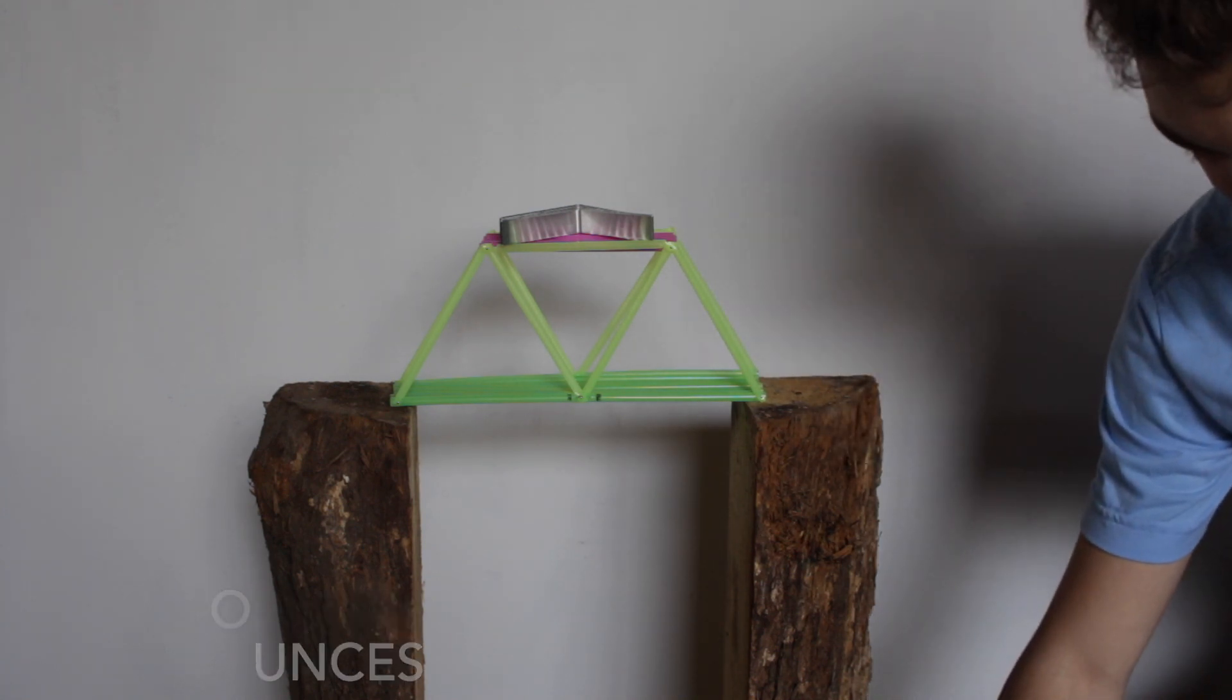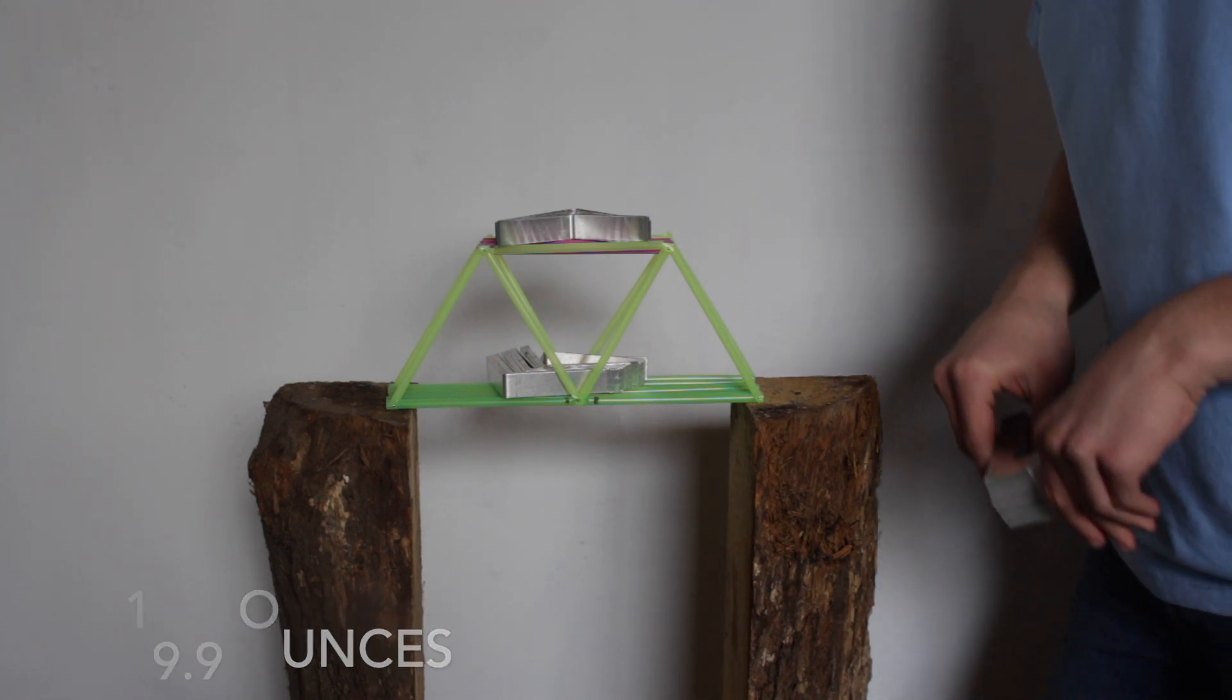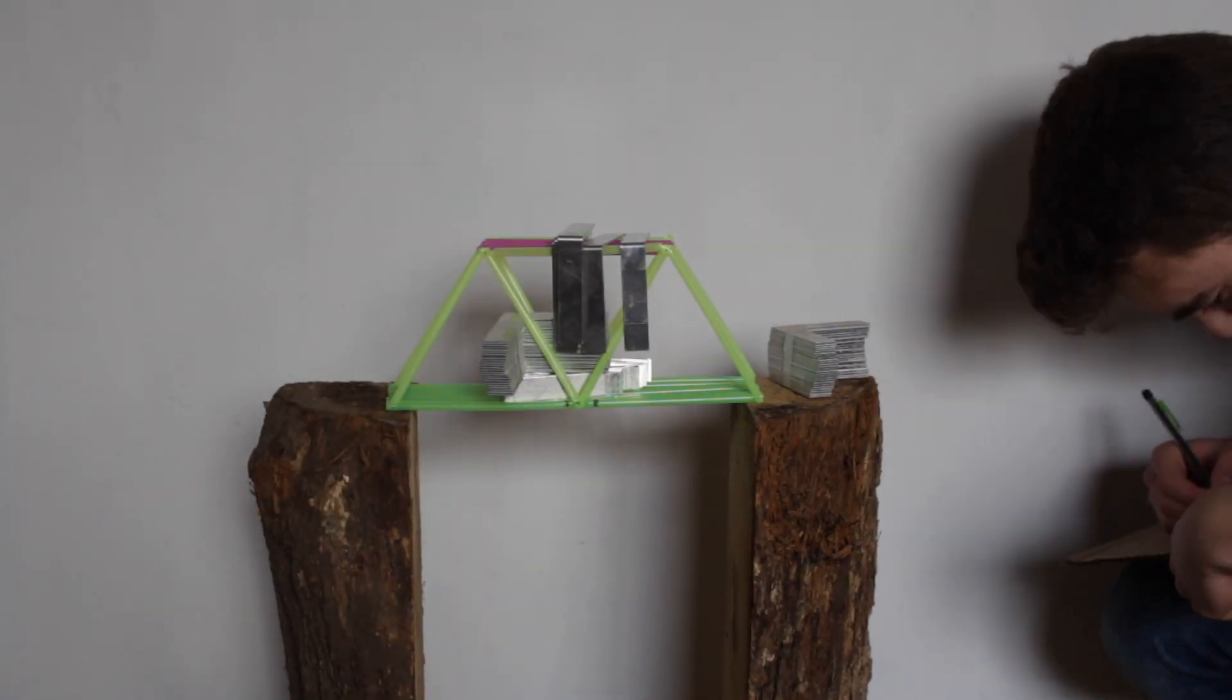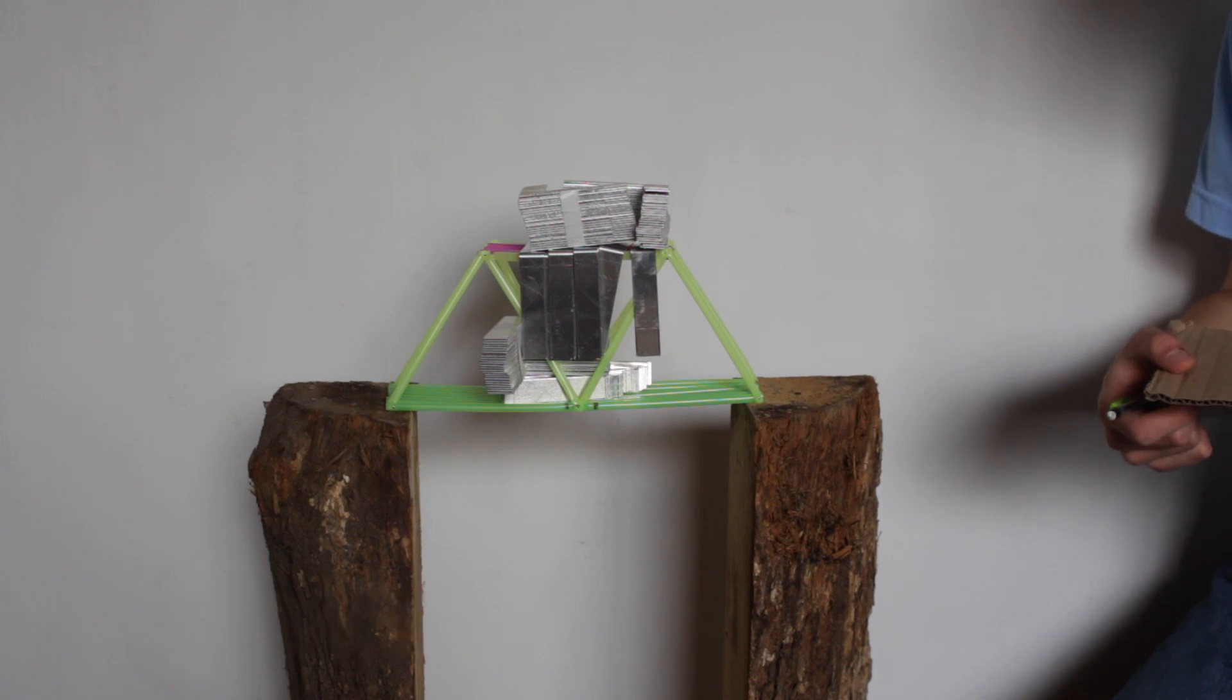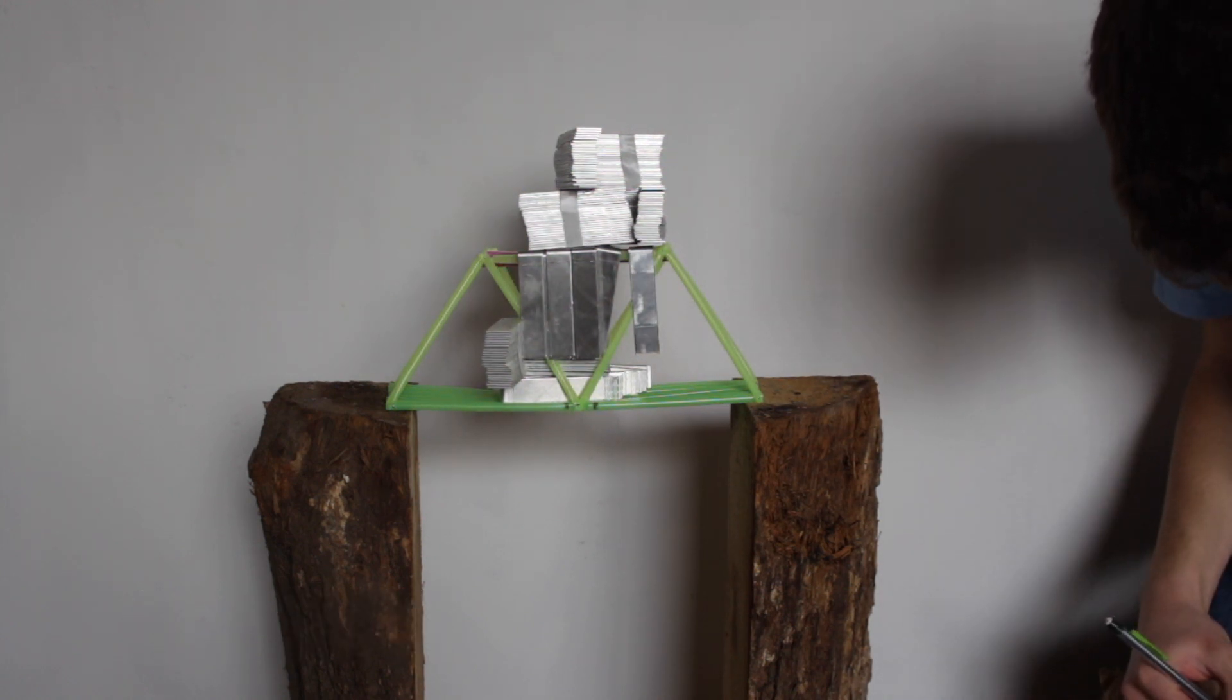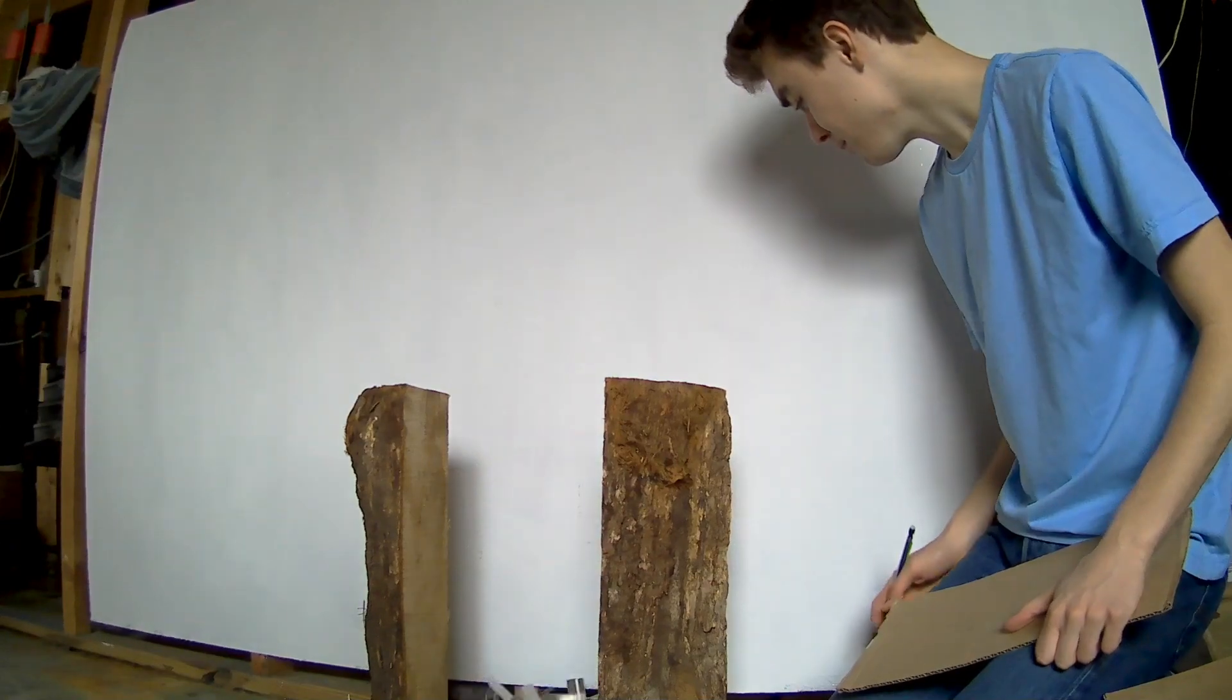Seven point nine ounces. Eleven point one ounces total. Eight point eight. Eight point eight plus eleven point one. So now it's twenty-eight point eight ounces. Another eight point nine, another eight point nine. And it fell.